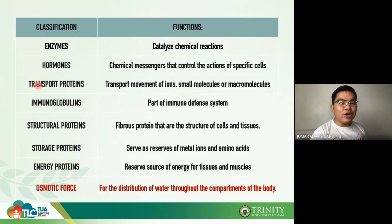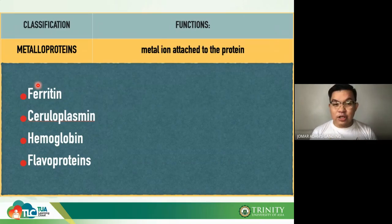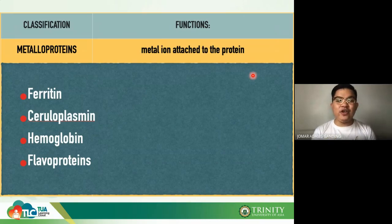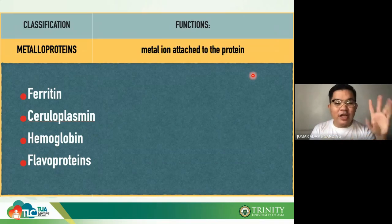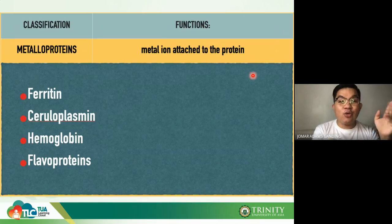The first type of conjugated protein is metalloproteins — proteins with metal ions attached. For example, ferritin contains ferric iron. Ceruloplasmin contains copper.